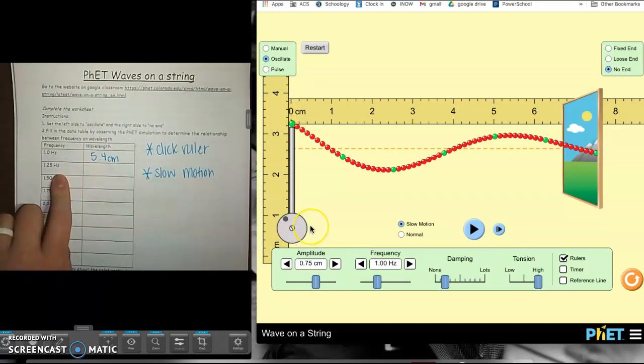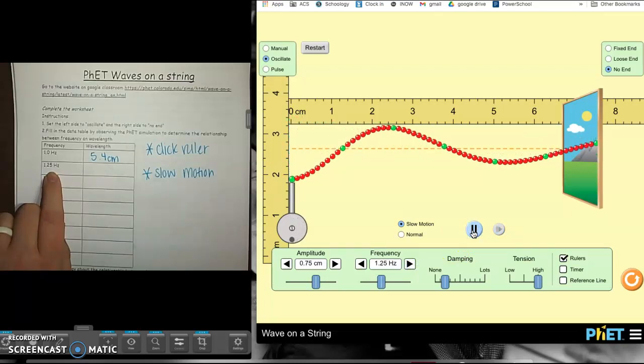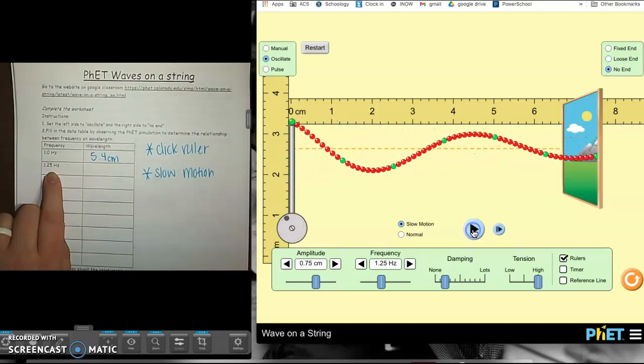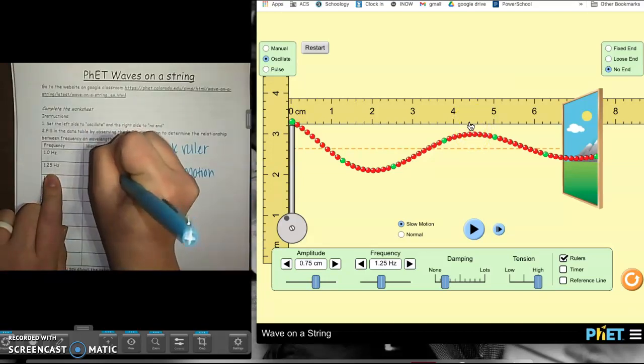On the next one, our frequency is 1.25. So we're going to bring our frequency up to 1.25. We're going to click start. We're going to give it a second, because we know that our frequency is going to have to pick up speed a little bit. Once it's really starting to go, we're going to click pause, and we're going to see we've got a new crest to our new crest. So we've got a new crest right here, which is about 4.5. So 4.5 centimeters.